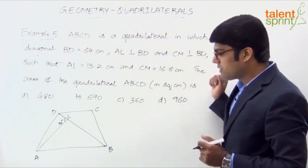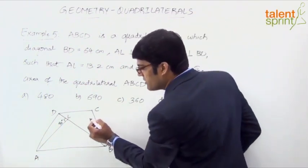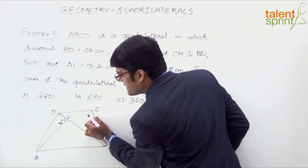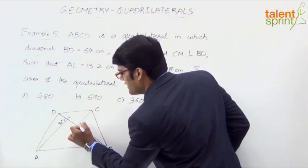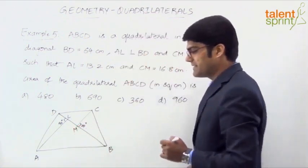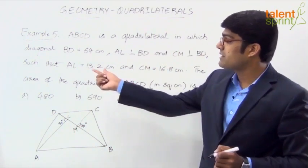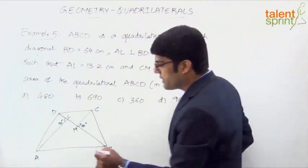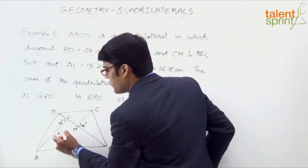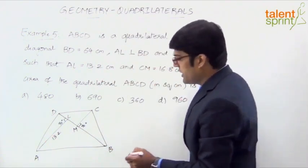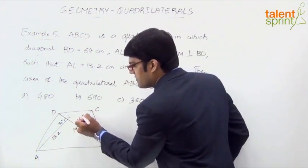Similarly CM is also perpendicular to BD. So from the point C also we need to drop a perpendicular. Let us say it is this point here, M. Point M. And this angle also is 90 degrees. What else is given? The lengths here. AL 13.2. So this basically is 13.2. And CM is 16.8. So CM this is 16.8.